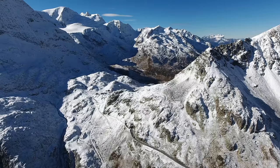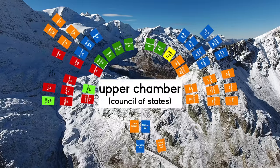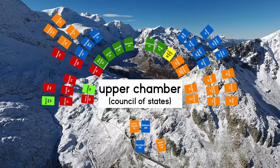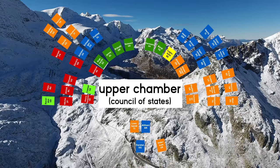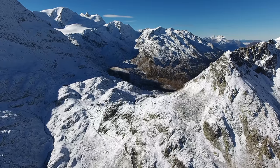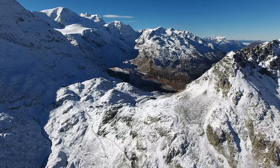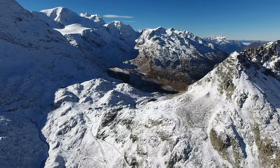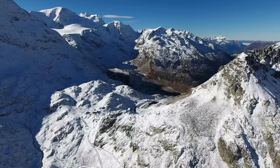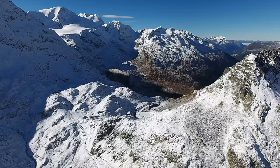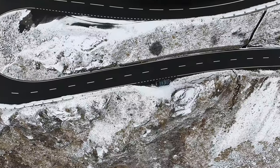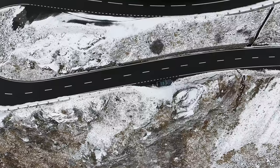In the upper chamber, every canton has two seats, except for the cantons of Obwalden, Nidwalden, Appenzell Ausserrhoden, Appenzell Innerrhoden, Basel City, and Basel District, which are so-called half cantons and therefore only have one seat in the upper chamber.